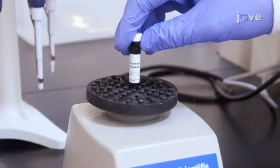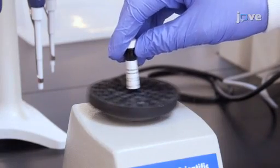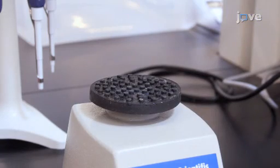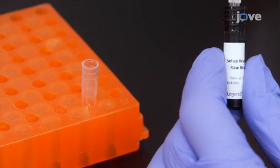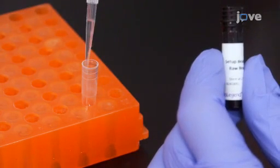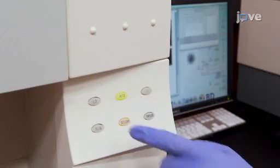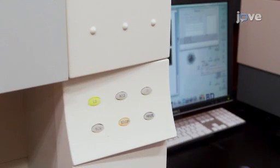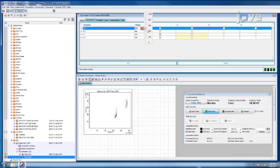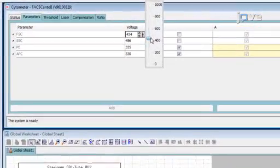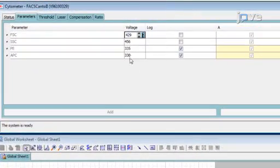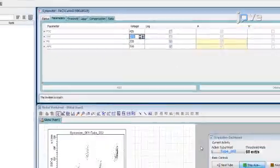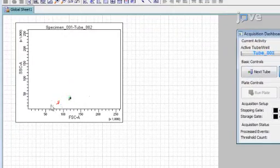Vortex the vial of raw beads included in the kit for 30 seconds to resuspend the beads. Transfer 400 microliters of the raw beads to a new FACS tube. Set the flow cytometer flow rate to low. Run the raw beads, carefully adjusting the gain and voltage for forward scatter and side scatter so that both size populations of these beads are visibly separated and easy to gate.